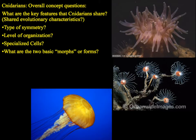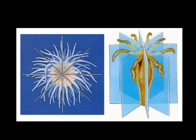We're going to take a look at the type of symmetry that these organisms have, their level of organization, what kind of specialized cells they have, and what are the two basic morphs that the cnidarians have. In terms of symmetry, these have the most simple kind — radial symmetry. You can cut them in any way you want and you'll have the same on one side as the other.